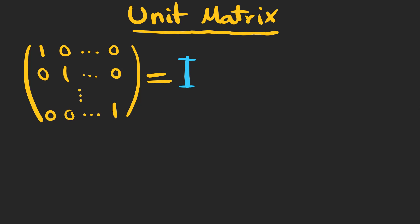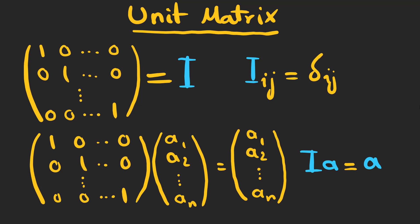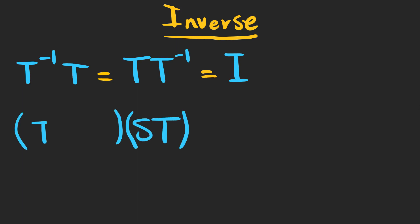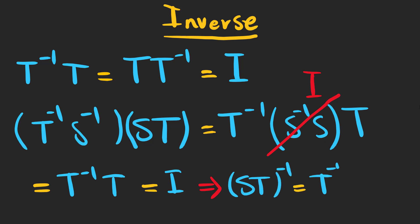The unit matrix, whose diagonal elements are all one and all other elements are zero, is denoted by I. Its elements are delta_ij, equal to one when i and j are the same. Acting on a vector, it changes nothing. The inverse of a square matrix multiplied by itself gives the unit matrix. If we take S times T and multiply by T-inverse times S-inverse, we get the unit matrix — so the inverse of ST is T-inverse times S-inverse.